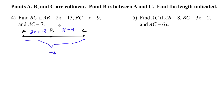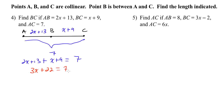We write our equation: AB which is 2x plus 13, plus BC which is x plus 9, equals AC which is 7. Combining like terms: 13 plus 9 is 22, and 2x plus x is 3x, so 3x plus 22 equals 7. Subtracting 22 from both sides gives 3x equals negative 15. Dividing by 3 gives x equals negative 5.